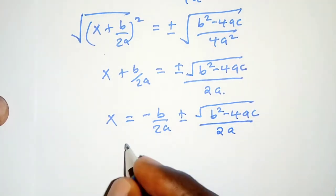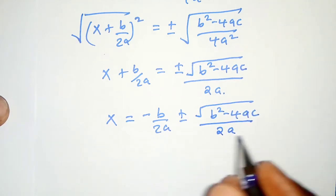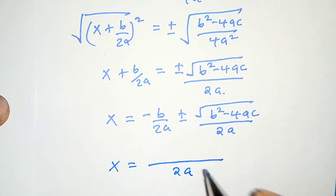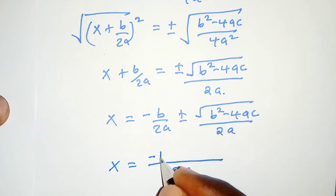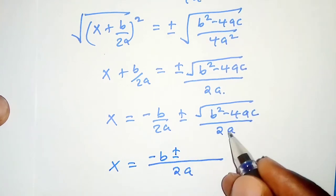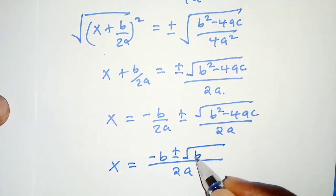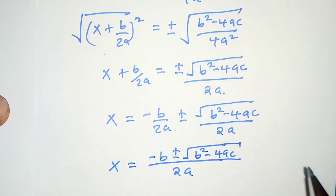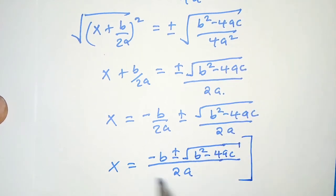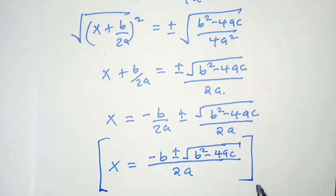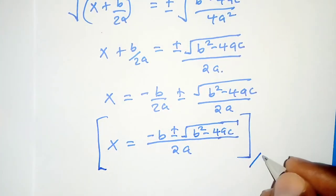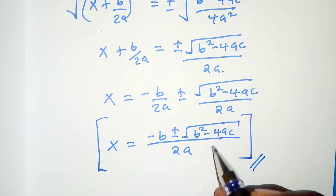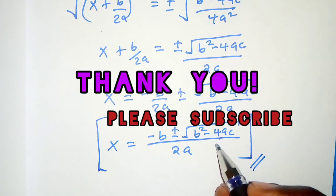Finally, because 2a is the common denominator, we say x equals negative b plus or minus the square root of b squared minus 4ac, all over 2a. And that is the quadratic formula. You can use it to solve any quadratic equation that is presented to you. Thank you for watching. See you in the next video.